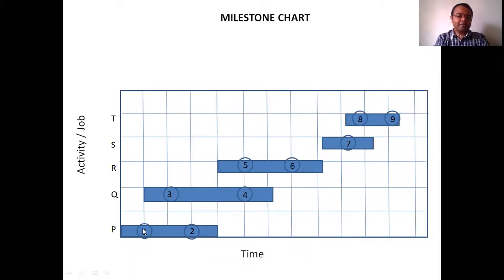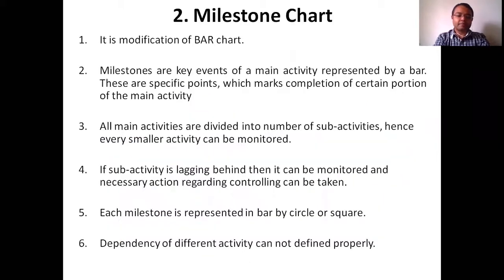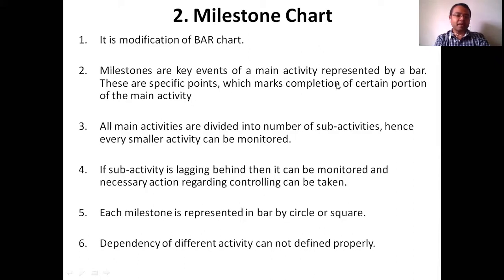In the milestone chart, we add different milestone points — 1, 2, 3, 4, 5, 6 — within the bars. Milestones are the key events of the main activity represented by the bar. These are specific points which mark the completion of a certain portion of the main activity.